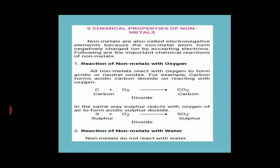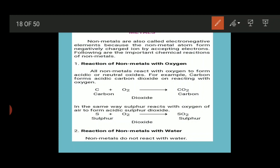Let's start with the chemical properties of non-metals. Non-metals are also called electronegative elements. As we already discussed, non-metals are electronegative in nature, meaning they have a tendency to gain electrons and develop a negative charge. The first reaction is the reaction of non-metals with oxygen. All non-metals react with oxygen to form acidic or neutral oxides.